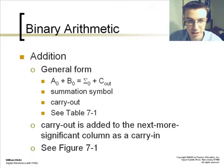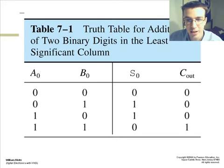In addition, the general form is A0 plus B0 equals sigma 0, or sum of 0, sum of A plus B, plus C out, which is the carry out. It's a summation device. The carry out is added to the next more significant column as a carry in. This is shown through this truth table, exactly how it was shown in the example prior.